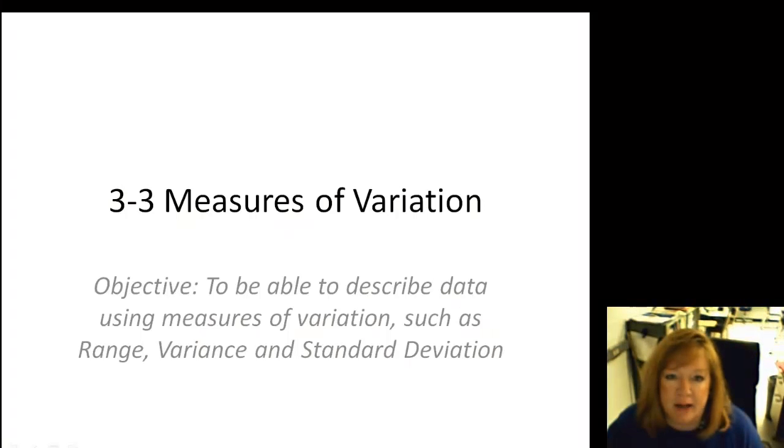Hello and welcome back. We are onward and upward in chapter three and we're starting with measures of variation. Now the last couple sections have dealt with the mean, the median, the mode and the range. And that's central tendency of data. But that doesn't tell us the whole story about how the data is distributed. And that's what this next section is about, to be able to describe the data using measures of variation such as range, variance, and standard deviation.